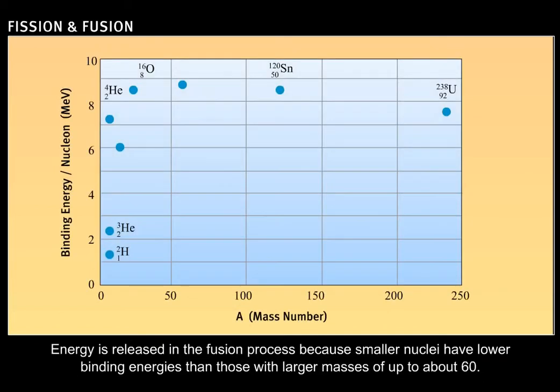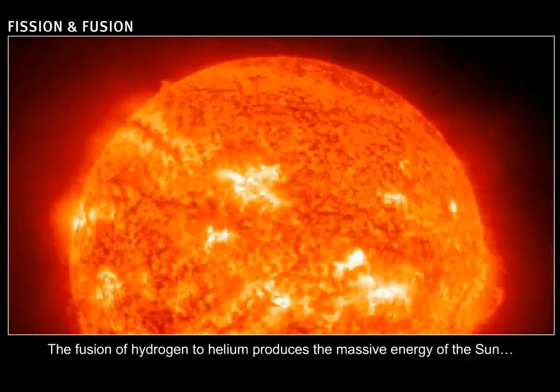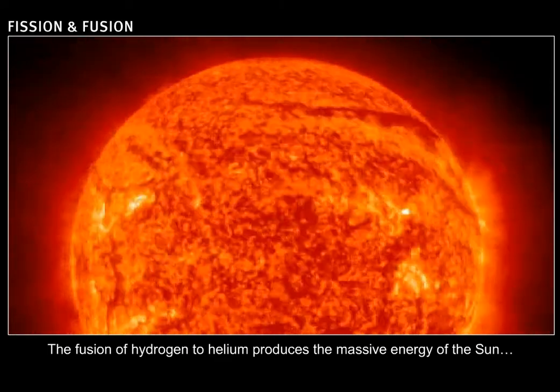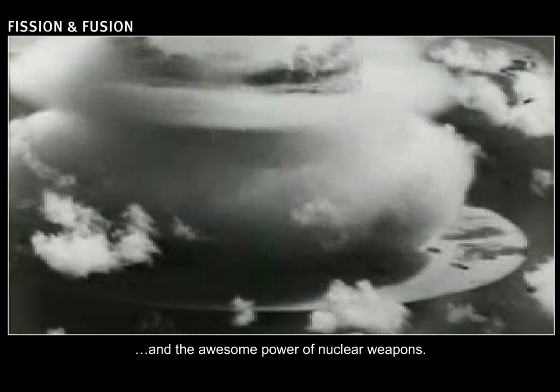Energy is released in the fusion process because smaller nuclei have lower binding energies than those with larger masses of up to about 60. The fusion of hydrogen to helium produces the massive energy of the sun and the awesome power of nuclear weapons.